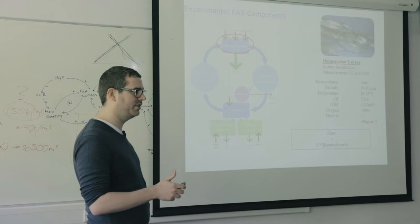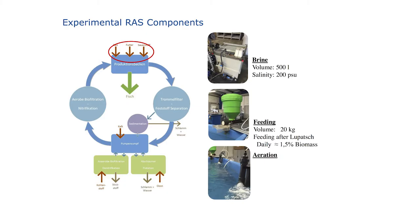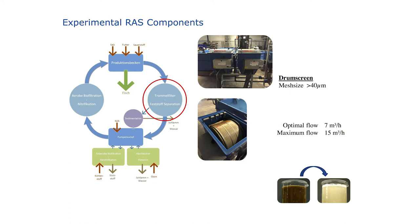Our flow, just a rule of thumb for our technology, is about three times the basin volume per hour. At the tank we had three systems: we added salt from a brine, feed from an automated feeding system, and oxygen through aeration. From the production basin the water flows through two drum screens with a mesh size of 40 micrometers.